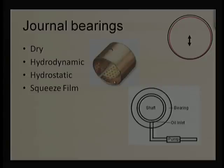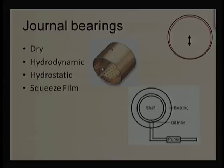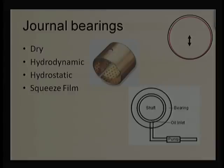Coming to the dry bearing — this is a typical dry bearing, split so that it can be fitted in a bearing housing and the journal will be supported on it. There are some dimples on it, so this bearing can also store lubricant. If lubricant is available but not supplied continuously, this kind of bearing can store liquid lubricant for some time and give a lesser coefficient of friction. There is also a hole that can be used to supply oil or to fix the rotational degree of freedom of the bearing.